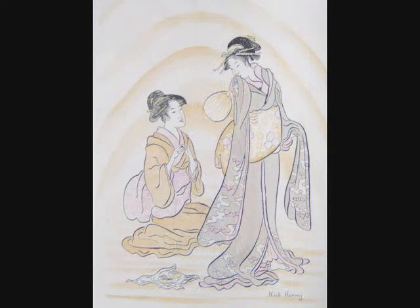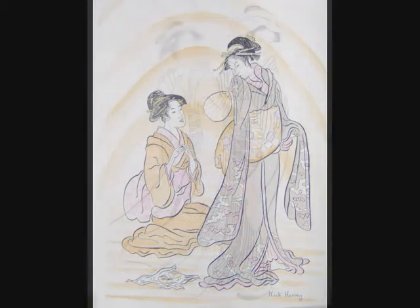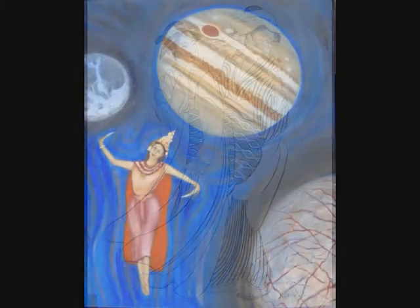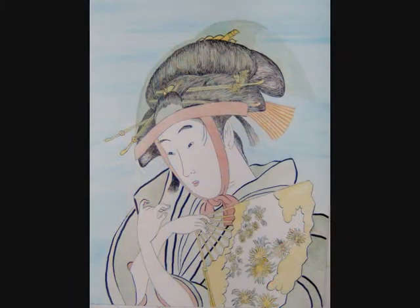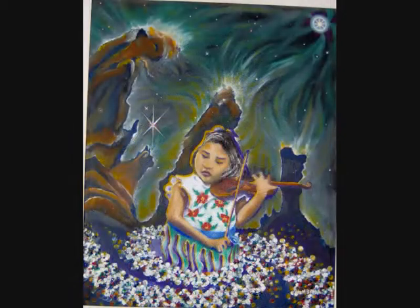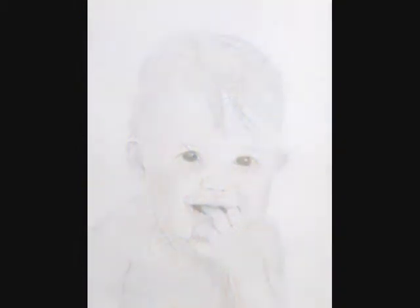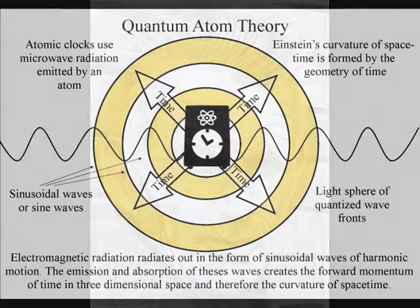The Twin Paradox is a thought experiment involving twins, one of whom is an astronaut and the other stays at home. The astronaut brother undertakes a long space journey moving at almost the speed of light, while the other remains on Earth. When the travelling brother finally returns to Earth, it is discovered that he is younger than his sibling.